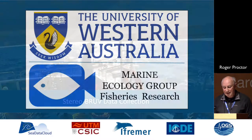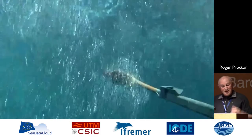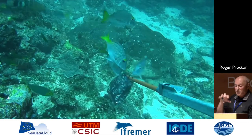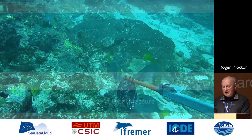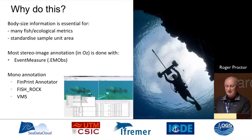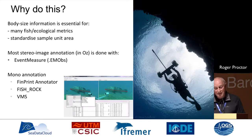IMOS is generally looking to support underwater imagery collection and processing across all platforms in Australia. Underwater imagery through baited remote vehicles is a highly technical process — the technology really comes in ensuring it lands the right way up on the seabed. It collects imagery of fish that come to eat bait placed in front of it. If you want to look at the health of the oceans you need to know something about fish and ecological metrics, and you need to do this in a standardized way.